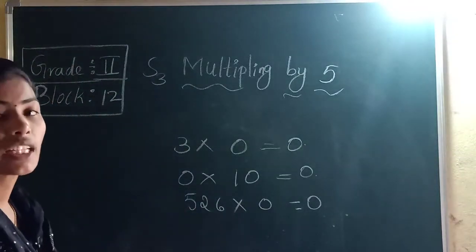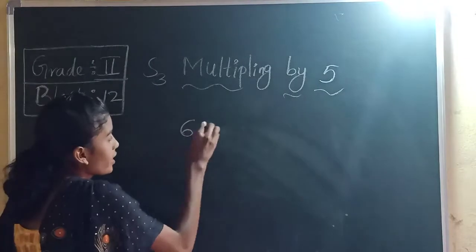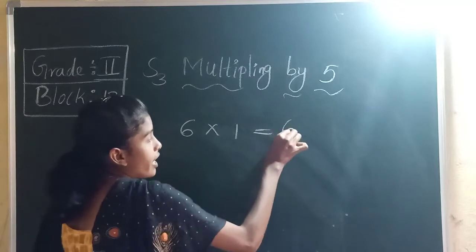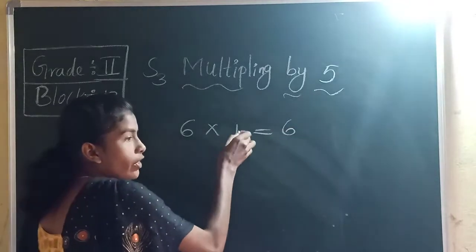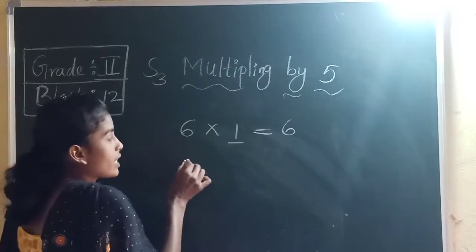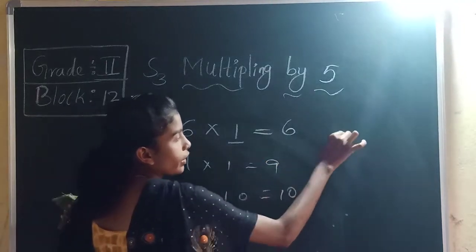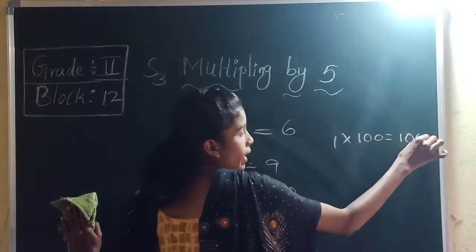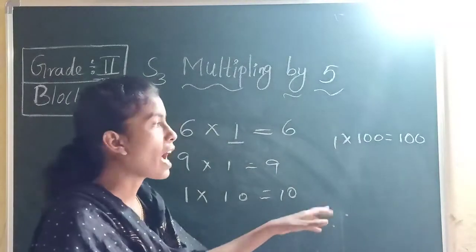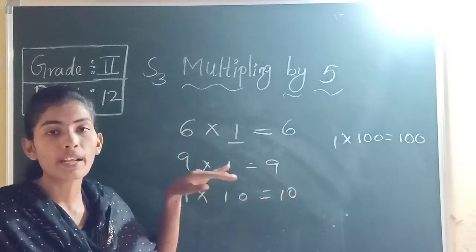Now, if you multiply a number with 1 — for example, 6 into 1 — the answer is 6. If you multiply any number with 1, or 1 with any number, the answer is always itself. So 1 into 10 is 10, 1 into 100 is 100. This is the way to multiply by 0 and 1.